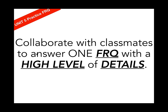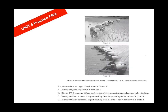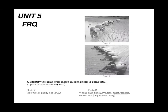For today, you're going to collaborate with classmates to answer one FRQ with a high level of detail. The FRQ has two photos. Part A asks you to identify the grain crops shown in each photo: Y is wet paddy rice — really just rice — and Z is wheat, though oats, barley, rye, flax, millet, canola, or dry rice are also acceptable. Part B asks you to discuss two economic differences between subsistence and commercial agriculture.